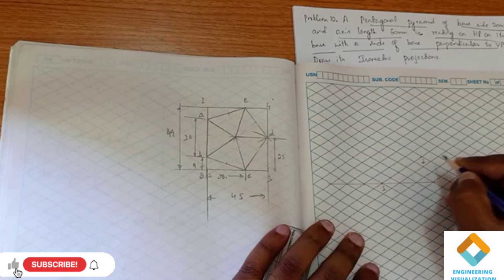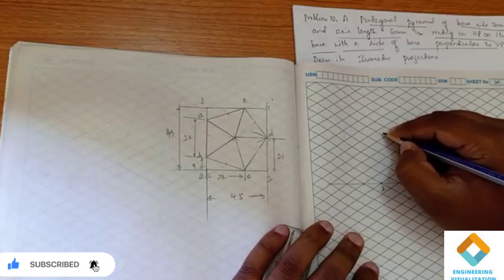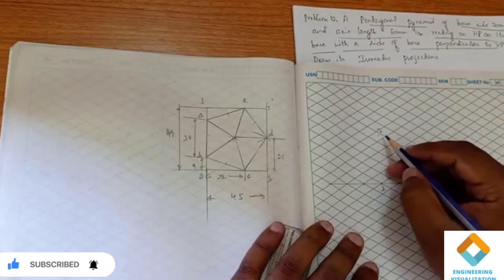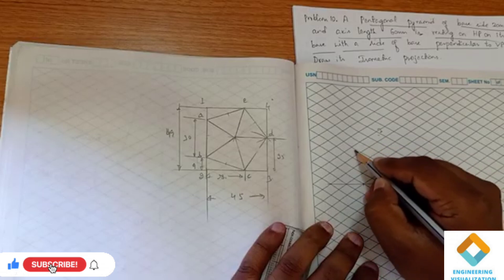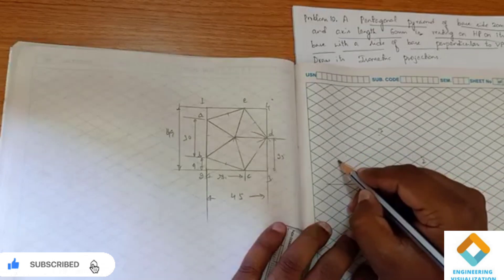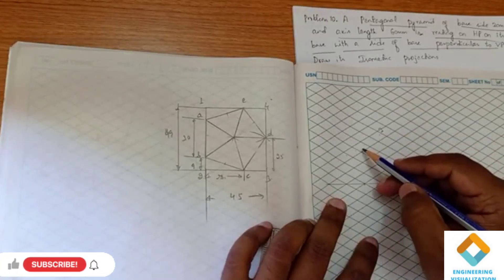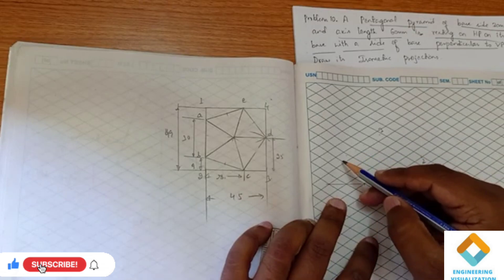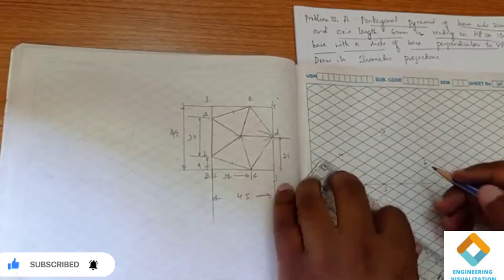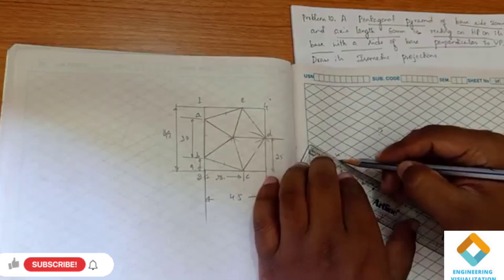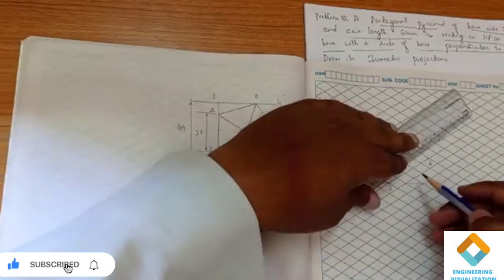From 2 to 3 we have 45, marking it here. So this is point 3, and again from 3 to 4 we have 49. So: 1 to 2 is 49, 2 to 3 is 45, 3 to 4 is 49, and again 45. We have to construct the box first.